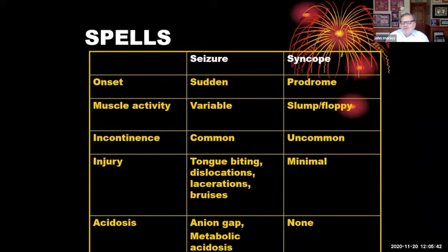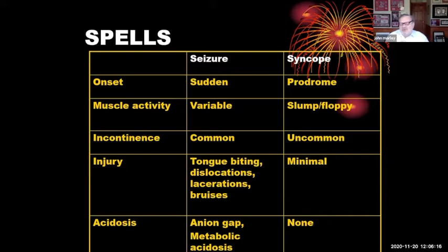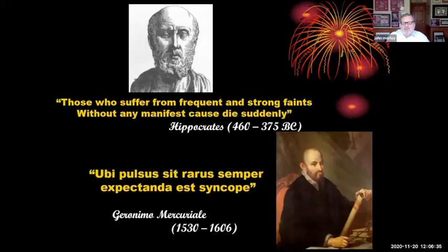I'll also talk about all the black swans and zebras towards the end. When we compare seizures and syncope, seizures usually have a sudden onset, whereas syncopal episodes usually have a prodrome — they start to feel as if something's wrong and then they pass out. Muscle activity is variable with seizures, but with syncope it's almost always slumping and they become floppy. Incontinence is very common in seizures; we hardly ever see it with syncope. Injuries with seizure — tongue biting, dislocations, lacerations, and bruises — are very common, but in syncope, because the body becomes so floppy, there are minimal injuries usually. Seizure is associated with a metabolic acidosis, whereas syncope isn't.